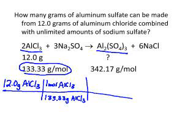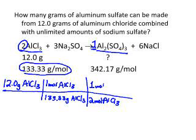Our next step is going from moles of one substance to moles of another. I've got aluminum chloride on top, so I'm going to put aluminum chloride on the bottom. The coefficient in front tells me the number to use — I have two moles of aluminum chloride. And since there's no number in front of aluminum sulfate, that's the imaginary one, so I have one mole of aluminum sulfate.